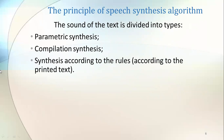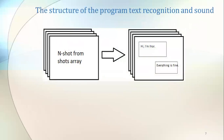Now let's move to the structure of the program for text recognition and sound. Since the image is not steady but changeable, its processing speed is important. The frame rate on the phone ranges from 30 to 60 frames per second. To achieve maximum text recognition performance, the program will outline the found text with a frame inside which the text will be displayed.